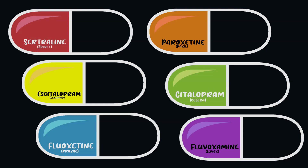The previous generation of antidepressants would block a whole host of receptors, so the selective serotonin reuptake inhibitors got their name because they blocked SERT more selectively. In this video we'll learn that these drugs have affinity for other receptors, but it's just much less so compared to the older drugs. Let's go one by one and review the differences between these medications.